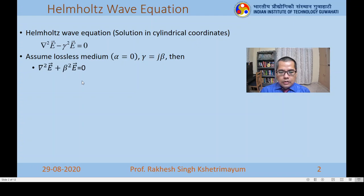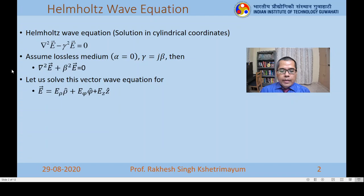We want to solve this in the cylindrical coordinate system, where the electric field has three components: E-rho, E-phi, and E-z. Most of the time, we are interested in solving for E-z or H-z, so the wave equation for E-z or H-z takes the form: Laplacian of E-z or H-z plus beta squared times E-z or H-z equals zero.